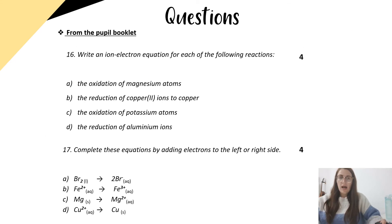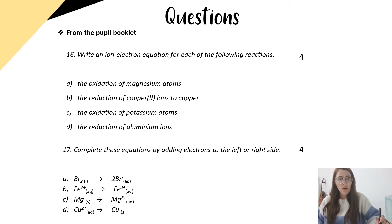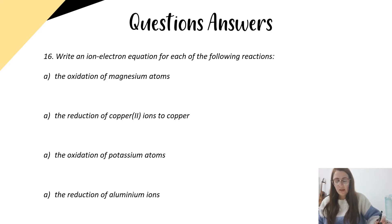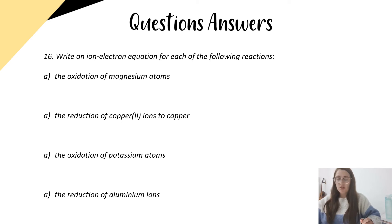As usual, we've got questions from the pupil booklet for you to go through. If you pause the video at this point and give those questions a go, then you can play the video and go through the solutions with me. So I'm going to start on question 16: write an ion electron equation for each of the following reactions. Part A: the oxidation of magnesium atoms.